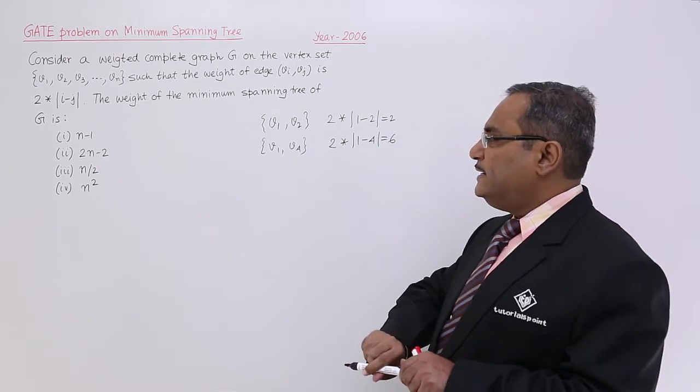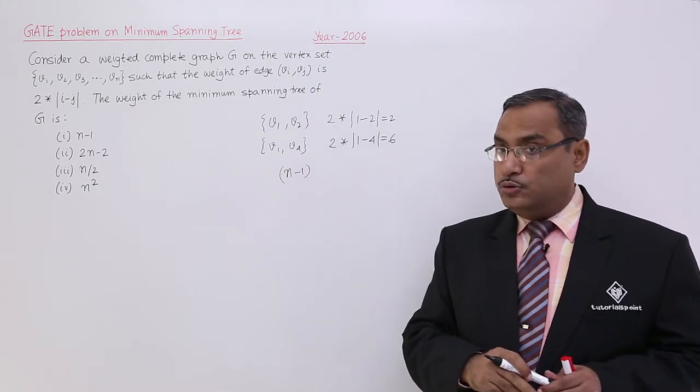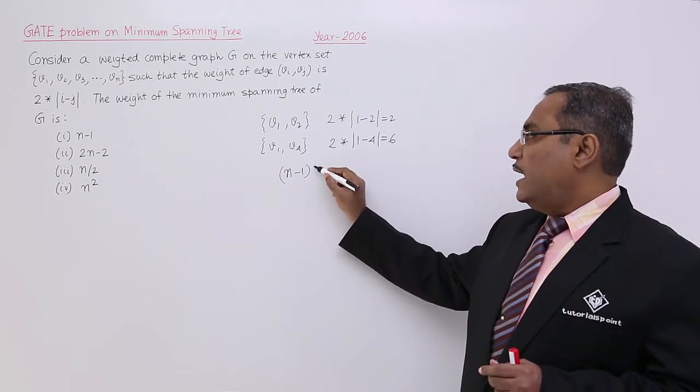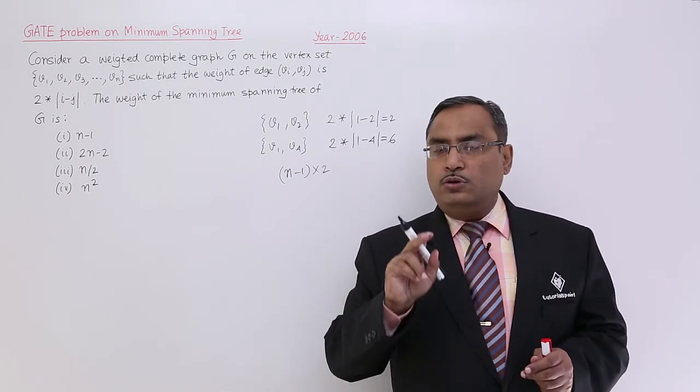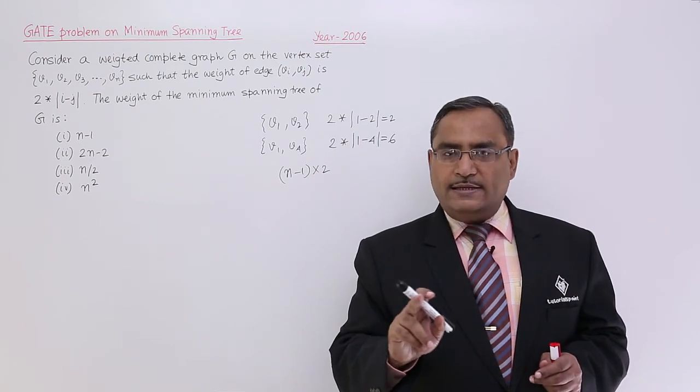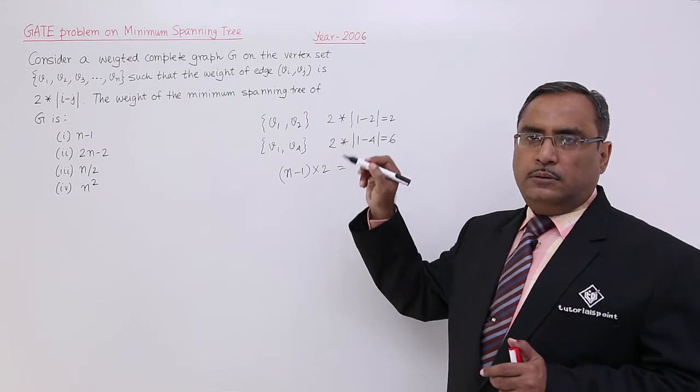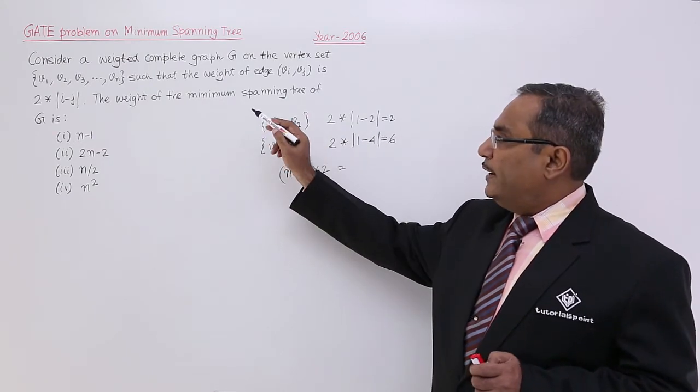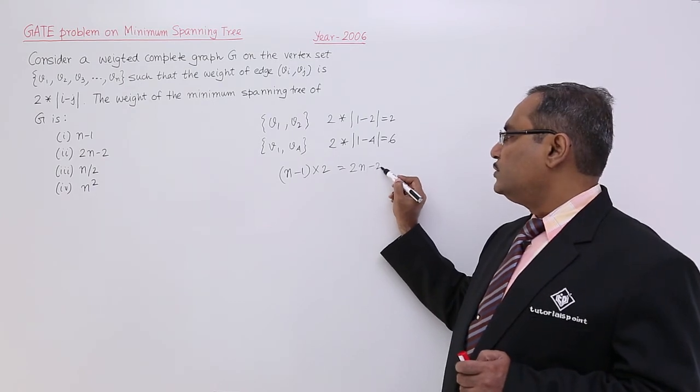How many edges are we taking? We are taking n-1 number of edges to connect n number of nodes for the minimum spanning tree, and we are going to take the weight value of 2 for those edges which are adjacent in the node number.